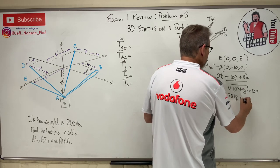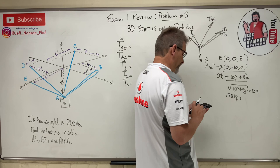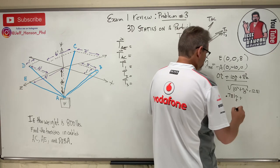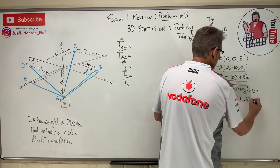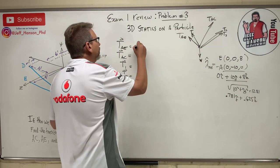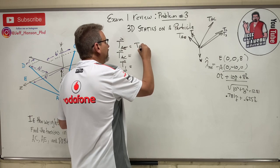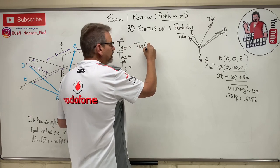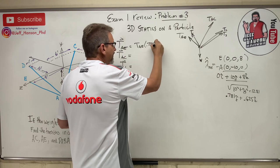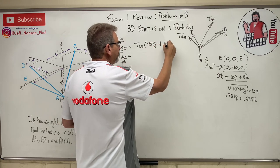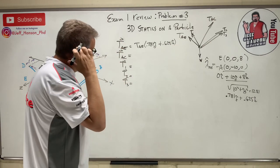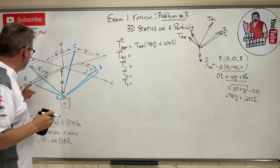So lambda AE gives coefficients: 10 divided by 12.81 = 0.781, and 8 divided by 12.81 = 0.625. Therefore T_AE times (0.781 j-hat + 0.625 k-hat). This is just a 2D vector — it doesn't even have three components.